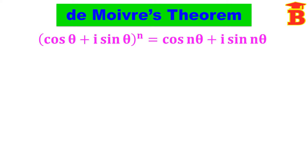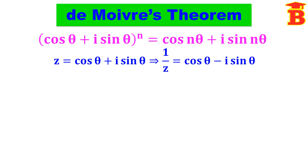Now let us see one important result. If z = cos θ + i sin θ, this implies 1/z = cos θ − i sin θ. So remember, in this format, if we take the reciprocal, that is nothing but the conjugate. The reciprocal is 1/z, and the conjugate means change the sign of i. This format may be cos + i sin or sin + i cos — in both cases, taking the reciprocal is nothing but the conjugate.